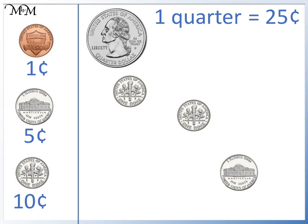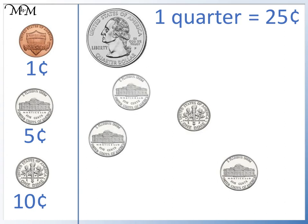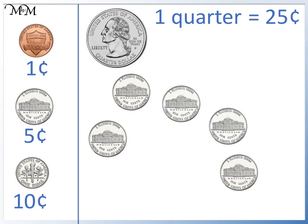We could also swap one dime, which is worth ten cents, with two nickels, which are each worth five cents. We could also swap the other dime for two nickels. So one quarter is also the same as five nickels.